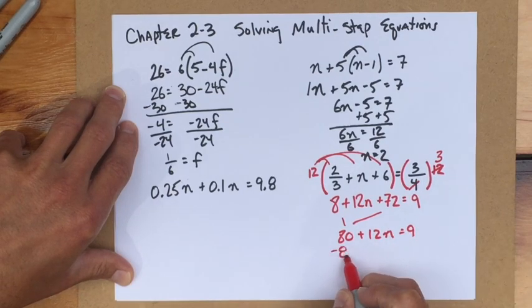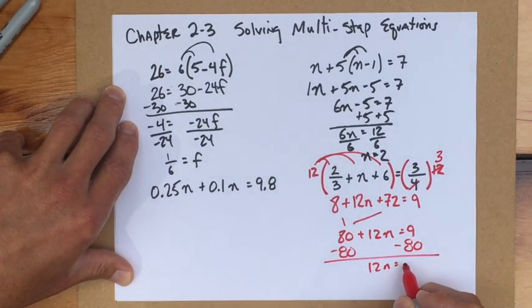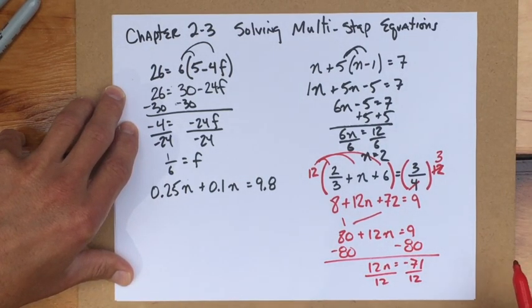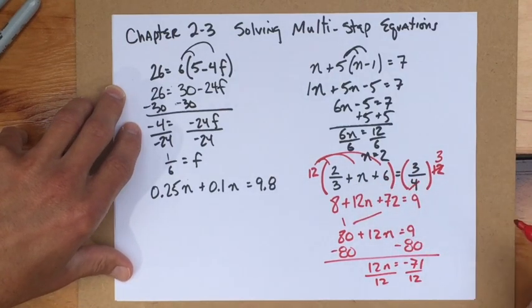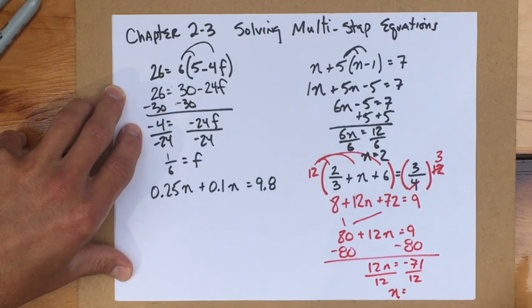And I can solve it pretty easily from there. Minus 80 to both sides. 12n equals negative 71. Divide both sides by 12. And here is often where if I'm going to have fractions in a problem, they might come back to haunt me at the end.